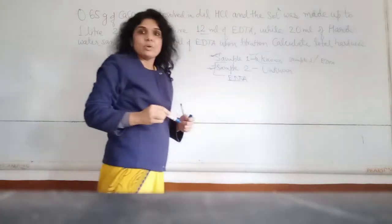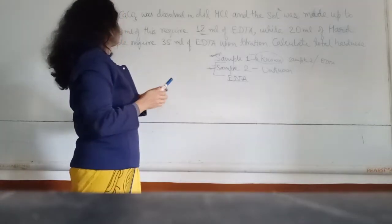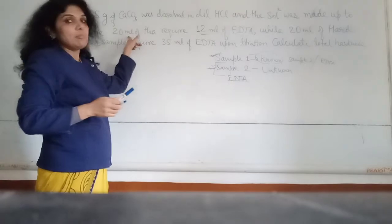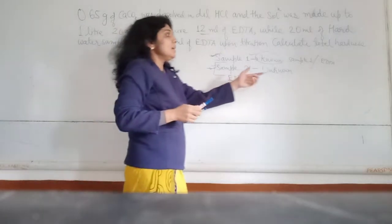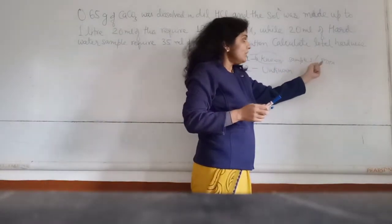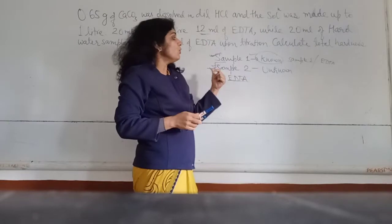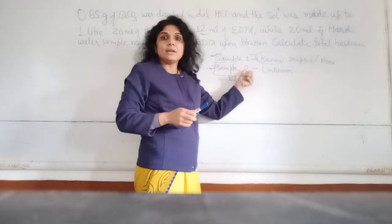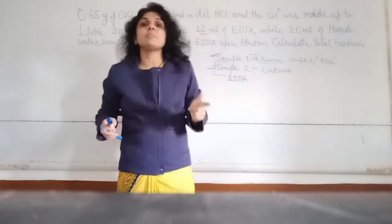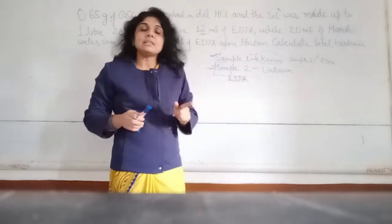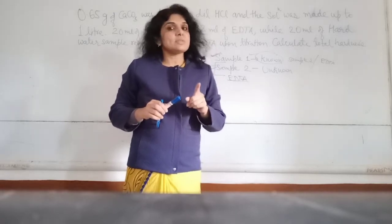This is our first step, and its burette reading is 12 ml. We took 20 ml of Sample 1 by pipette and titrated it with EDTA. Once we calculate the EDTA normality, it will be known, and we will then use it to find Sample 2. Ultimately we will determine the hardness as asked in the numerical. Before solving, let us go through the process of EDTA titration so it will be easy to calculate.